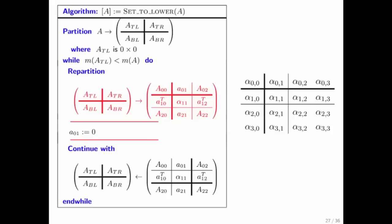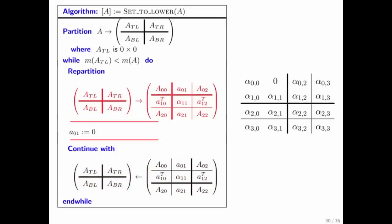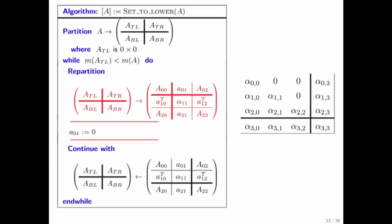Then we expose some more entries. Now we notice that this right, that 801 right here is just this element right there. We set it to zero. And we move on. We expose. We set to zero. We move on. We expose. We set to zero. We move on. And we're done.